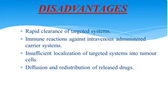Next are the disadvantages of the targeted drug delivery system. First is rapid clearance of the targeted system. Second is immune reactions against intravenously administered carrier systems, as our body may take carrier systems as antigens and produce immune reactions in some cases. Third is insufficient localization of the targeted system into tumor cells. Fourth is diffusion and redistribution of released drug.